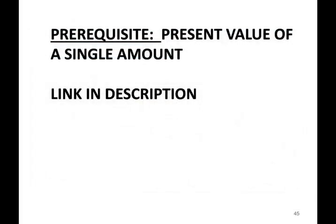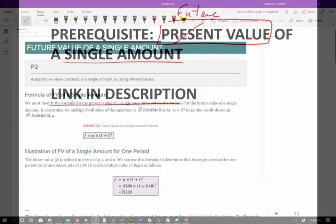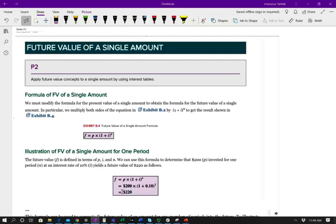A prerequisite for this session is the present value of a single amount. It's helpful if you understand how we compute the present value of a single amount, because in this session we are computing the future value of a single amount. The link is in the description. The idea behind the future value of a single amount is simply that we are looking into the future and finding out how much our money will be worth. It's much easier to understand the future value than the present value.